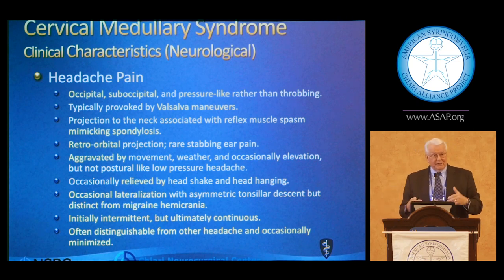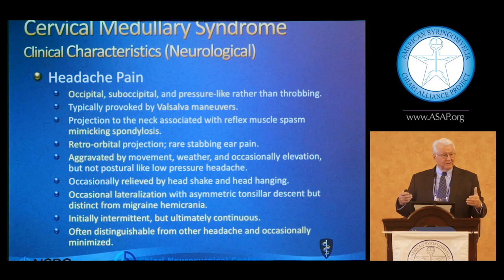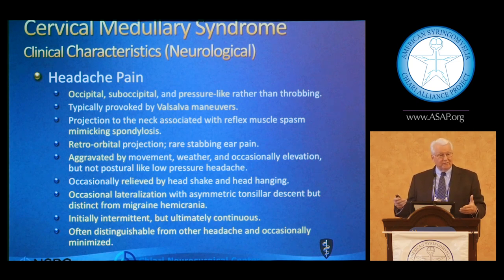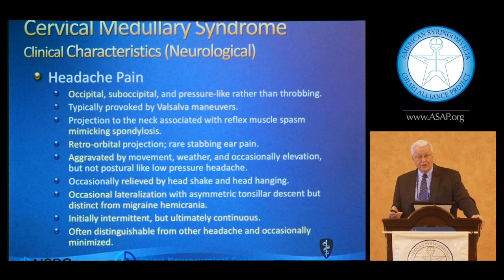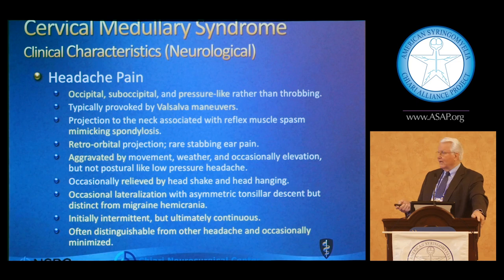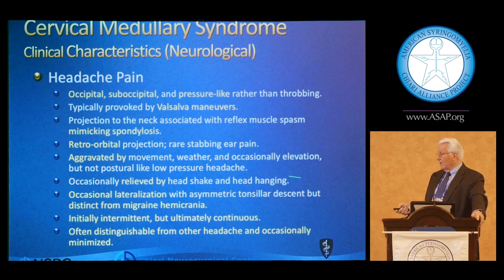You need to understand that patients can have both conditions — you can have measles and a broken leg. Patients with migraine make up about 30% of the female population, and you take a population of Chiari patients, about 30% of them are going to have migraine as well. So you have to distinguish the number and kinds of headache because you want to treat those separately. The classical issue is that it's aggravated by movement, rarely weather, occasional elevation, but you can do some provocative testing with jugular compression on exam.